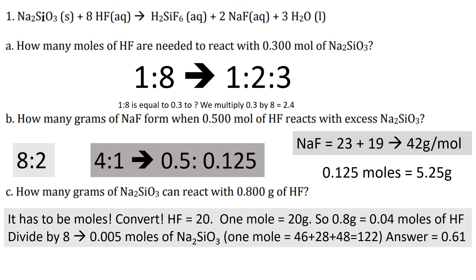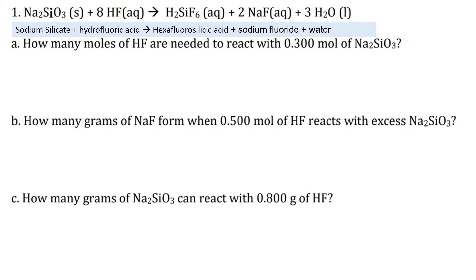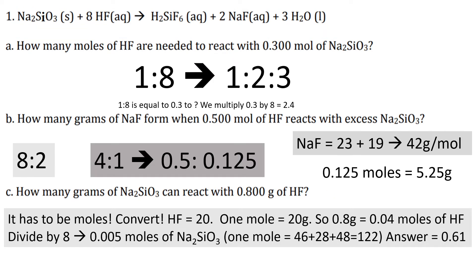From the balanced equation, one mole of sodium silicate reacts with eight moles of hydrogen fluoride, producing one mole of hexafluorosilicic acid, two moles of sodium fluoride, and three moles of water. So the molar ratio on the left is 1 to 8, and on the right is 1 to 2 to 3.